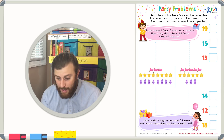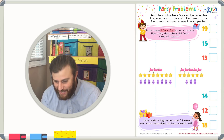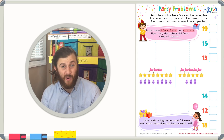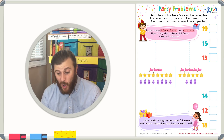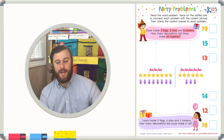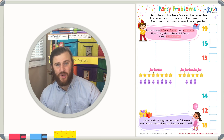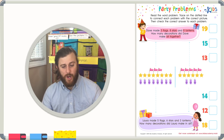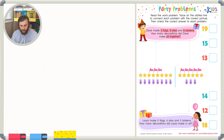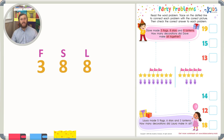Dave made three flags, eight stars, and eight lanterns. How many decorations did Dave make all together? So we have that he made three flags, eight stars, and eight lanterns, and we want to know how many he made all together. Let's find the picture first that matches this.